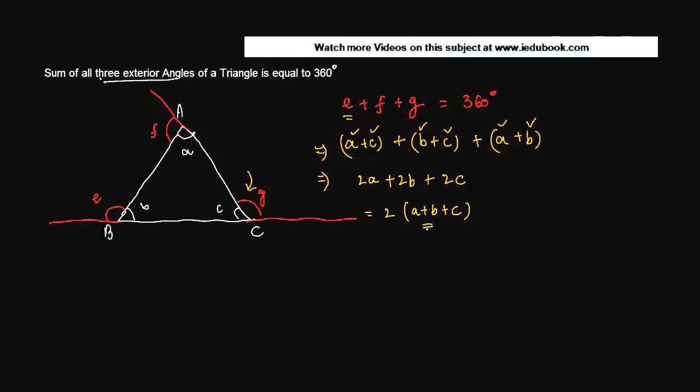But if you notice, a plus b plus c is what? Is the three angles of a triangle and we know that the sum of three angles of a triangle is equal to 180 degrees. Two into 180 gives you 360 degrees. And hence we prove that the sum of three exterior angles of a triangle is equal to 360 degrees.